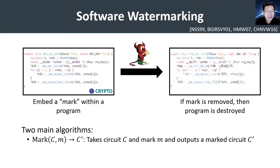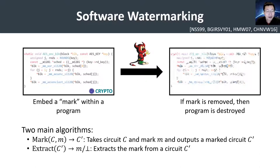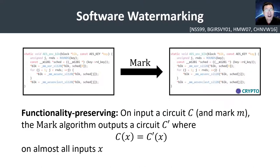More precisely, the watermarking scheme consists of two main algorithms: a marking algorithm that takes as input a Boolean circuit C and a mark M, and outputs a marked version of the circuit. The second is the extraction algorithm, which, given the circuit C prime, will extract the mark from the underlying circuit.